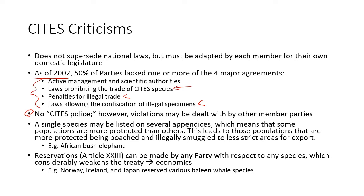Another criticism is that a single species may be listed on several appendices, creating confusion and the ability to cheat the system. For example, some African bush elephant populations are on Appendix Two — doing relatively well — while others on Appendix One are not doing well or are being heavily poached. Someone could poach an Appendix One elephant and through corruption obtain permits to sell it as an Appendix Two population — mislabeling it to bypass protections.